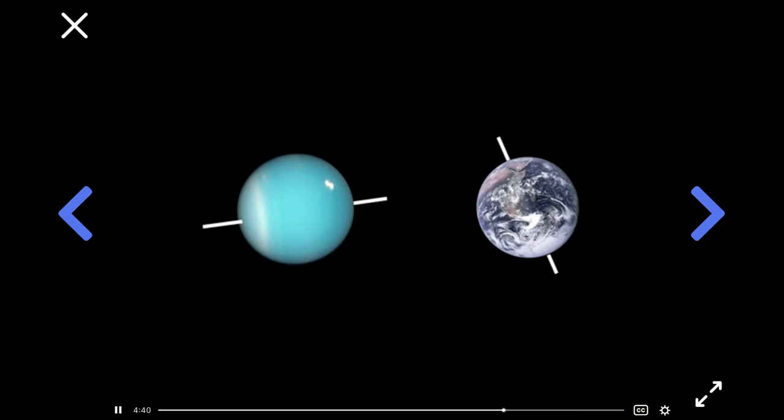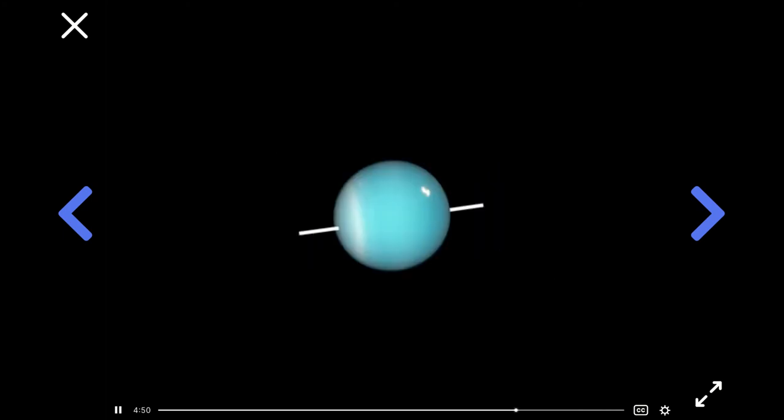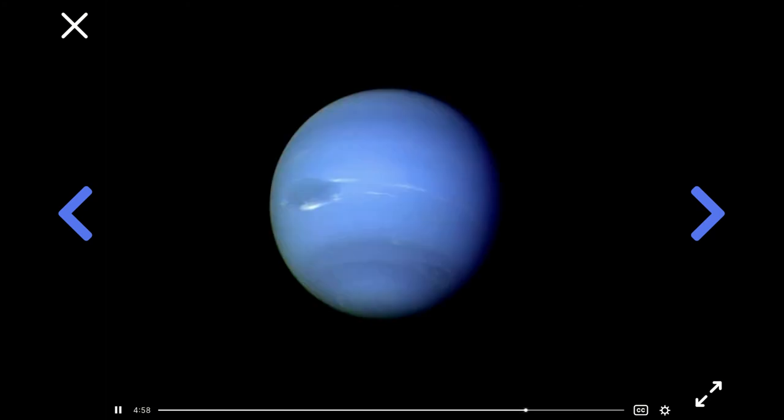Its north pole doesn't point anywhere near Polaris or up above the solar system. Instead, it points off sideways to the solar system. All the other planets' poles point up and down. But not Uranus. This makes scientists wonder if at some point in its history, maybe something slammed into Uranus and knocked it over on its side like this.